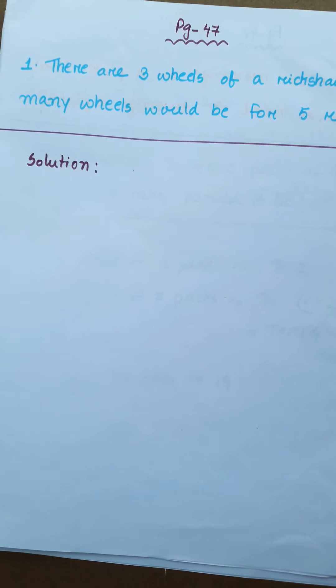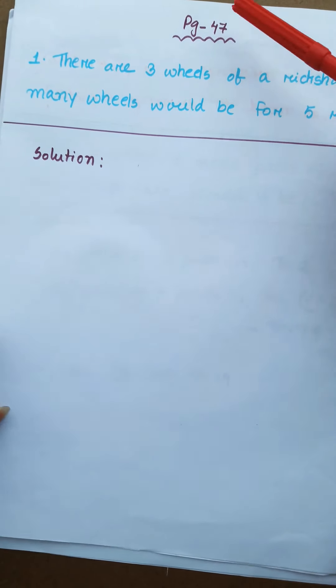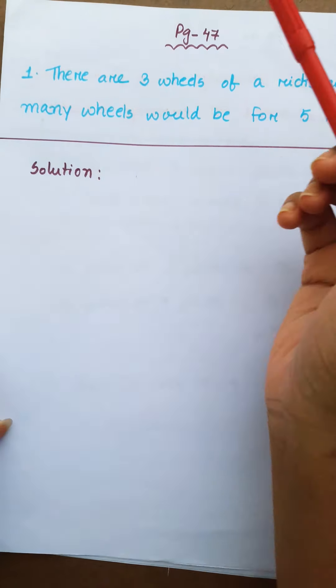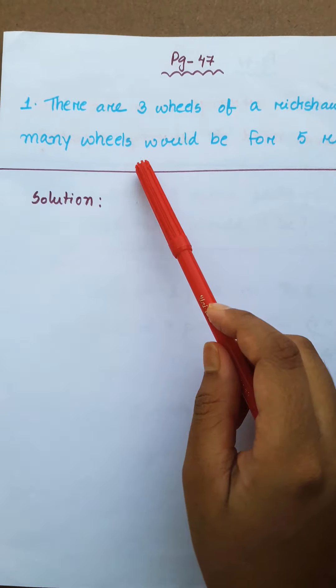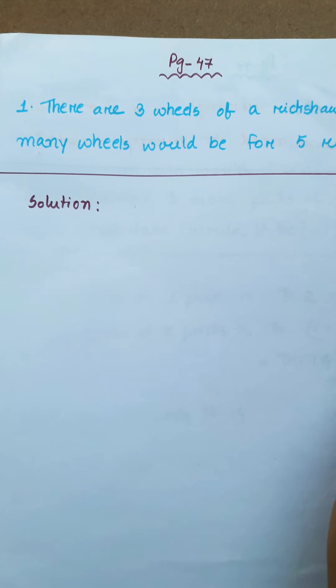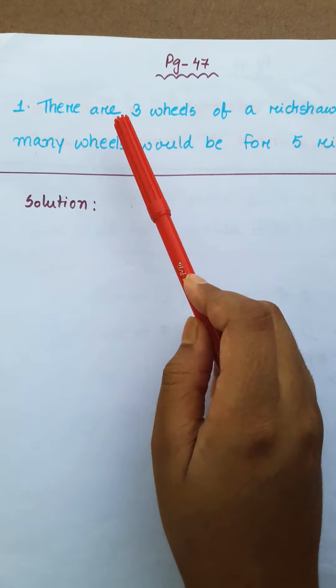Now the next math, page number 47, question 1. There are 3 wheels on a rickshaw. How many wheels would there be for 4 or 5 rickshaws?